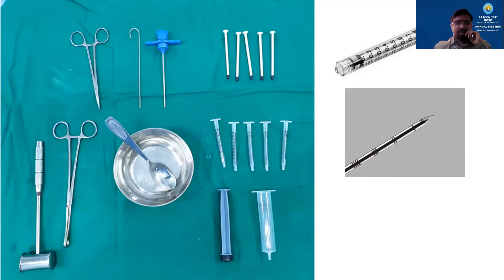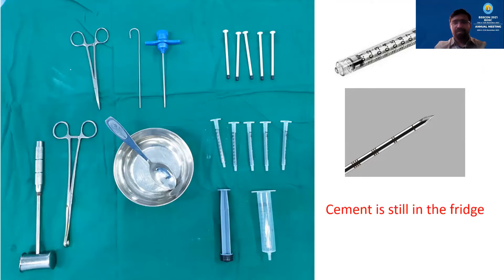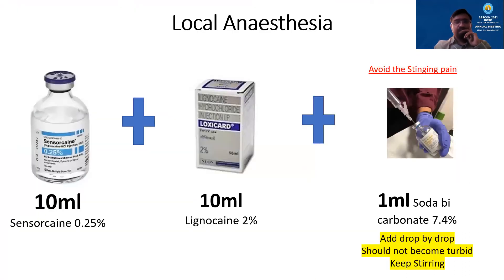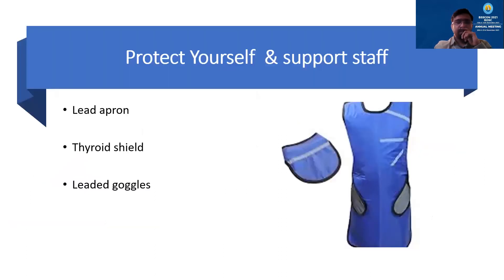This is the armamentarium you will need: needles and 1cc syringes — ideally Luer lock, but that is not mandatory. The cement is still in the fridge; you won't call for it until the needles are in. For local anesthesia, I use 10ml of Marcain 0.25%, 10ml lignocaine, and add 1ml of sodium bicarbonate drop by drop only — if it becomes turbid, you cannot use it. Protect yourself with a lead apron, thyroid shield, and leaded goggles.